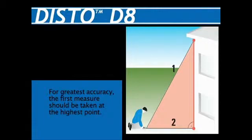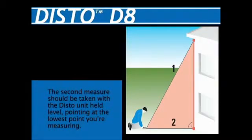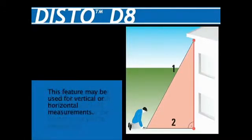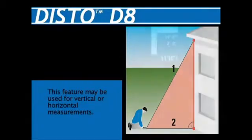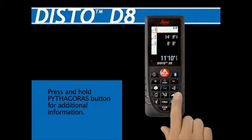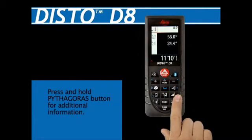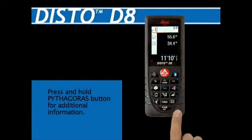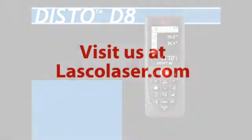For greatest accuracy, the first measure should be taken at the highest point and the second measure should be taken with the Disto unit held level, pointing at the lowest point you're measuring. Note: this feature may be used for vertical or horizontal measurements — for example, measuring the length of a wall section from a distance. Additional information can be calculated by pressing and holding the Pythagoras button until it beeps; the information along with the corresponding descriptive icon will be displayed.